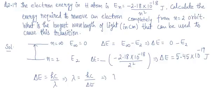Put all values in SI units: 6.626 into 10 to the power minus 34. Velocity of light will be 3 into 10 to the power 8 meter per second. And delta E in joules: 5.45 into 10 to the power minus 19.